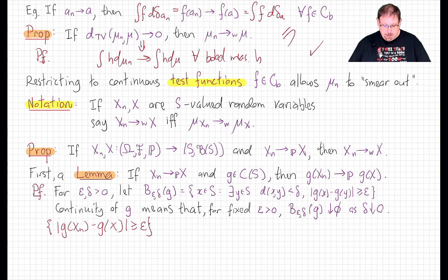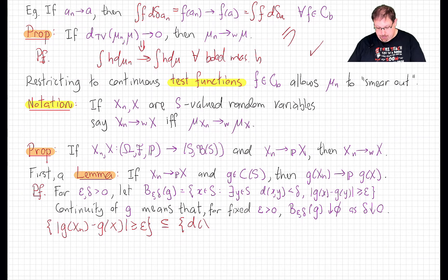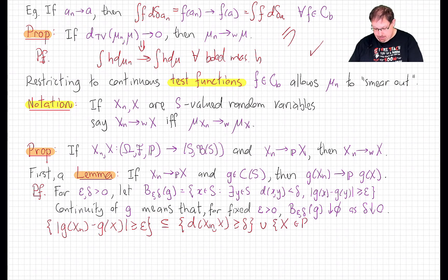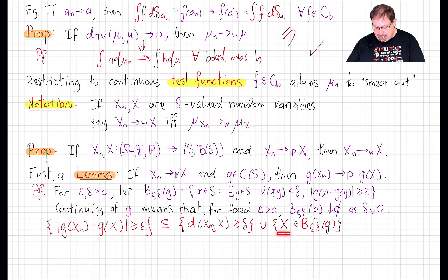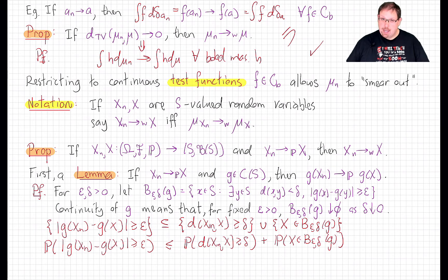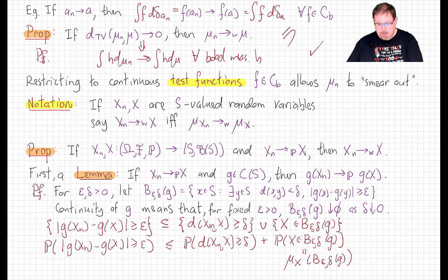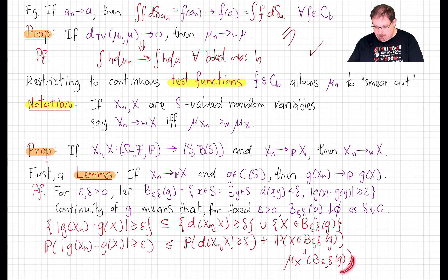We use that to prove our lemma as follows. For fixed epsilon, consider the set where |g(X_n) - g(X)| > epsilon. That is contained in the set where either X_n and X are delta-far away from each other, or X is in the set B(epsilon, delta, g). So the probability of this event is less than or equal to the sum of these two terms for any positive delta. By the change of variables theorem, the second term is the law of X at the event B(epsilon, delta). As delta gets smaller, this set shrinks to the empty set, and since this is a probability measure, that probability goes to zero.